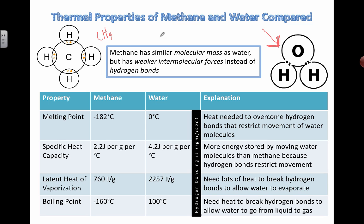The formula here is CH4 for methane, and over here, formula for water is H2O, as you know already. And just by comparing these four properties: melting point, specific heat capacity, latent heat of vaporization, and boiling point,